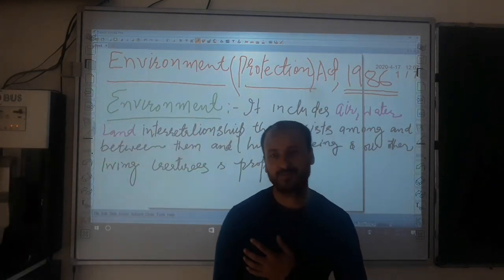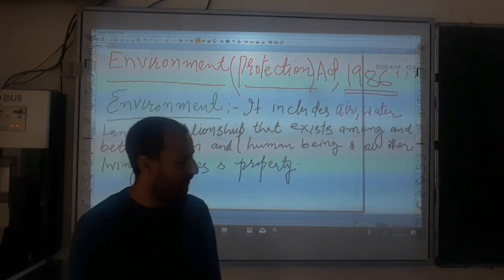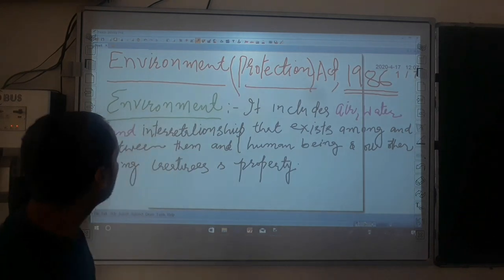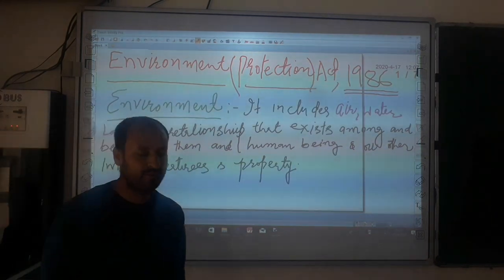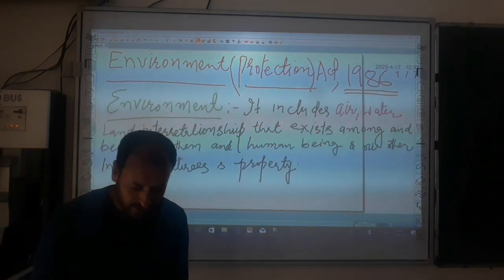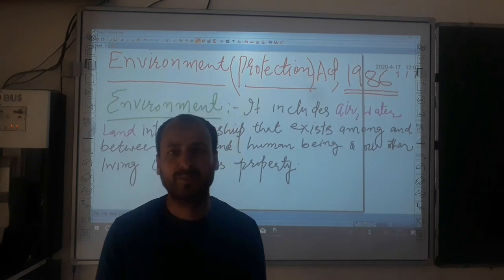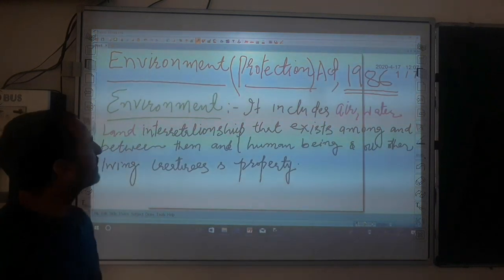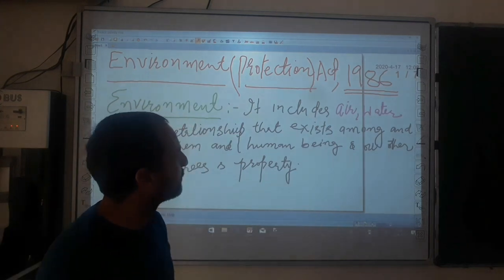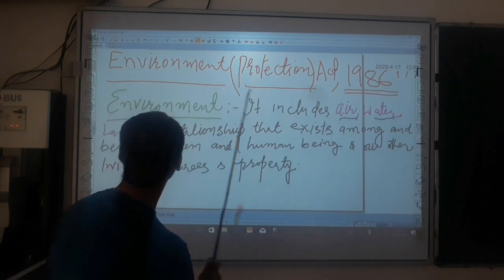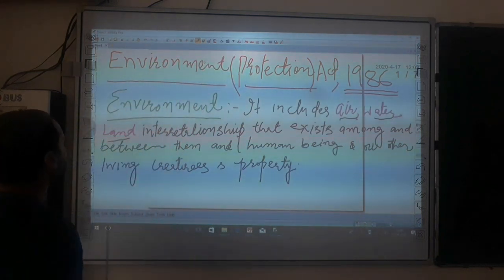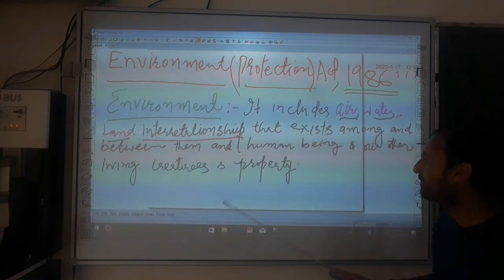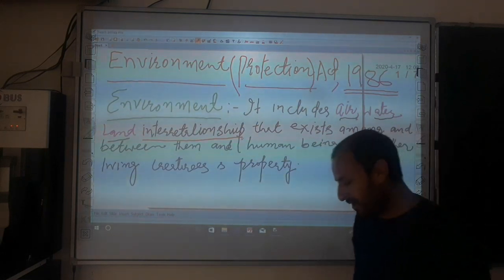As you may know from the very first lecture, we defined the environment in a broader perspective. Today we are going to define environment as per the law, as part of the Environment Protection Act 1986. As per EPA 1986, the definition of environment includes air, water, land, and the interrelationship that exists among and between them and human beings and other living creatures and property.